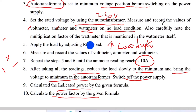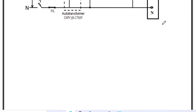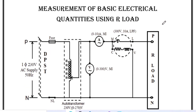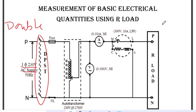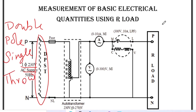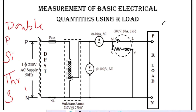Now we move on to the circuit diagram. This circuit diagram shows the measurement of basic electrical quantities — voltage, current, power — and the calculation of power factor with a given R-load. In the circuit diagram, AC supply of single phase 230 volt is given via a DPST switch — that is, a Double Pole Single Throw switch — which closes both points and supplies the rest of the circuit.